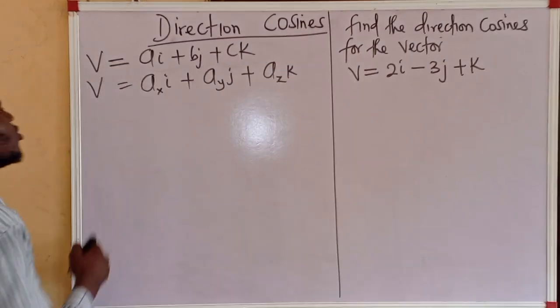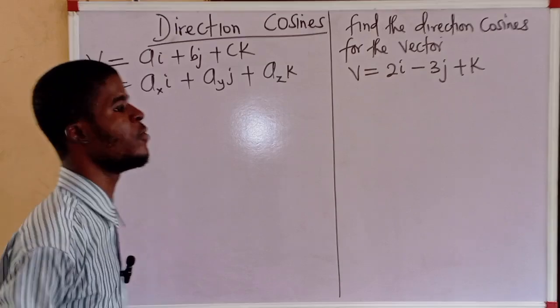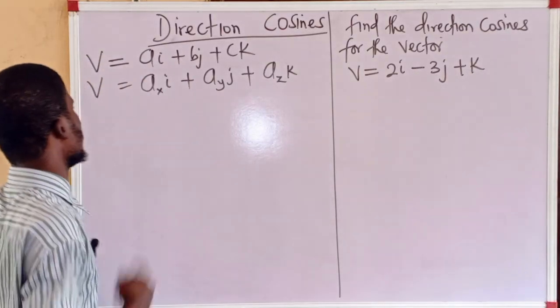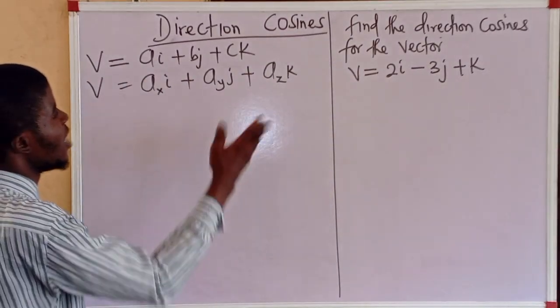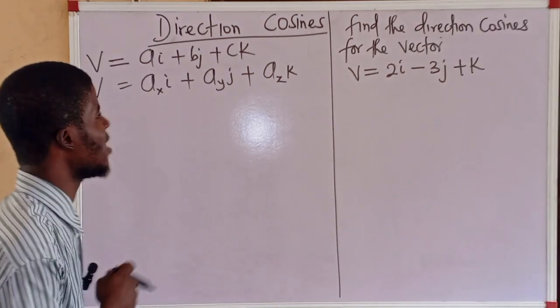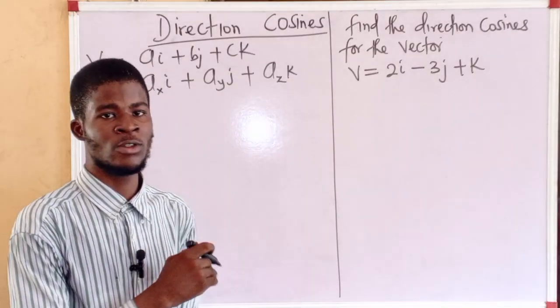I showed this notation earlier in the video on magnitude of a vector. They are the same thing, vector in three dimensions. What are the direction cosines for this vector?